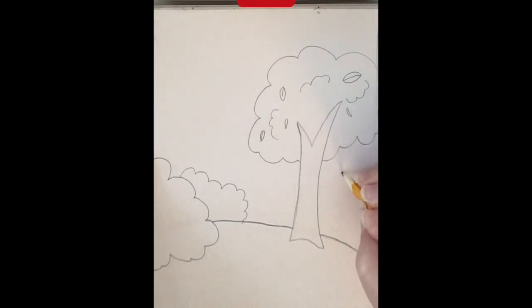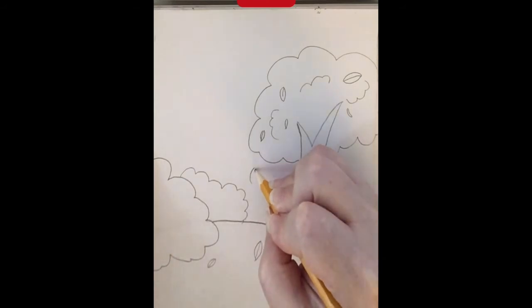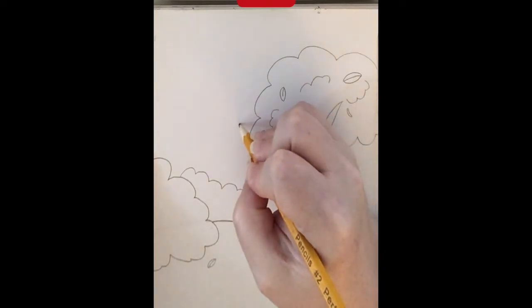And for the next part, I'm going to start adding more leaves, just having them float around the entire composition. Some might be on the ground, some can be floating in the air. And the closer they get to you or the bottom of the page, the bigger they should look.